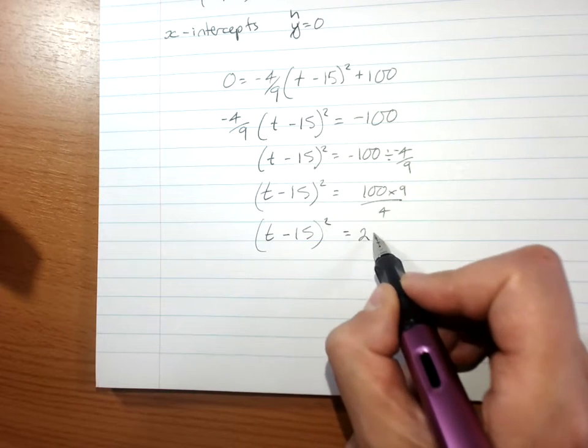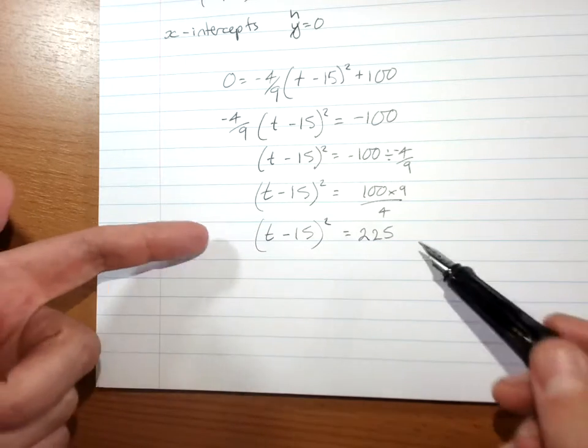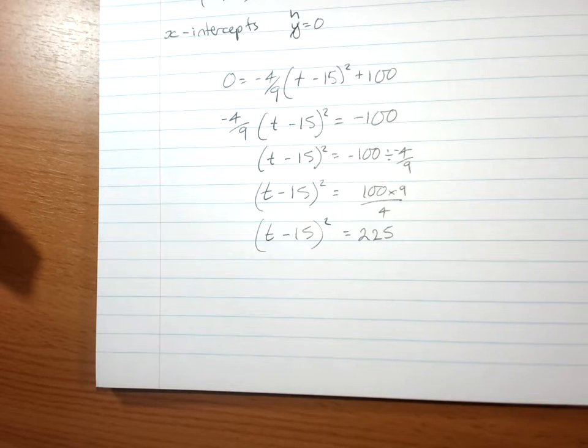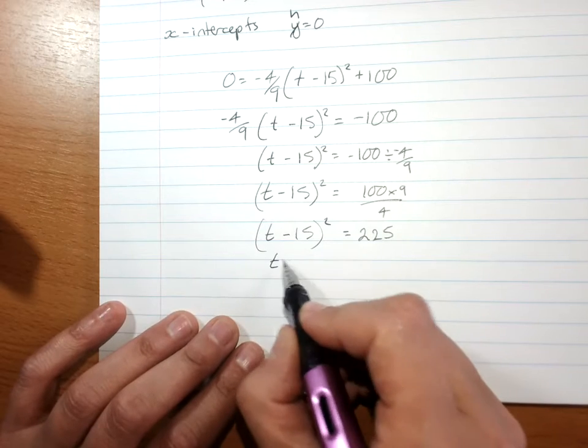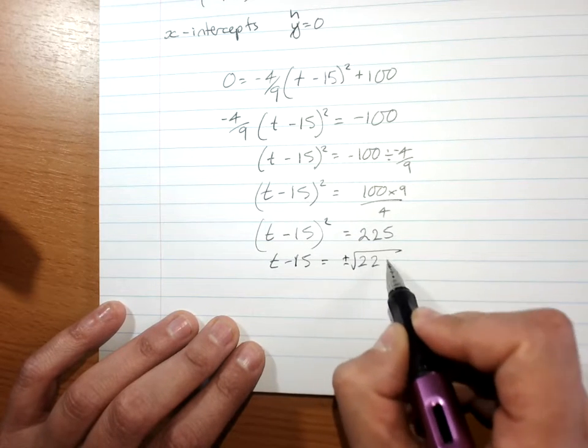Is 225. To take the square root of both sides, t minus 15 is equal to plus or minus the square root of 225.